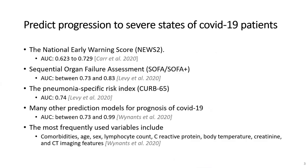There have been many predictive models and studies that predict progression to severe status of COVID-19 patients, and some of them actually achieved good performance in terms of area under curve, generally higher than 0.7. Frequently used variables of those models include comorbidities, age, sex, and lab test results such as lymphocyte counts, C-reactive protein, and imaging features such as CT.